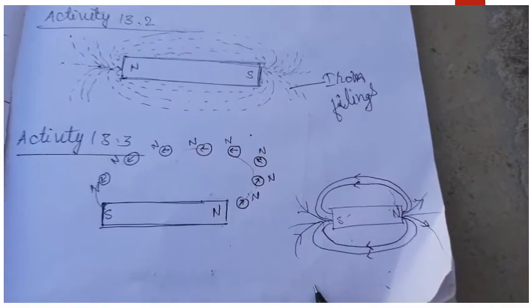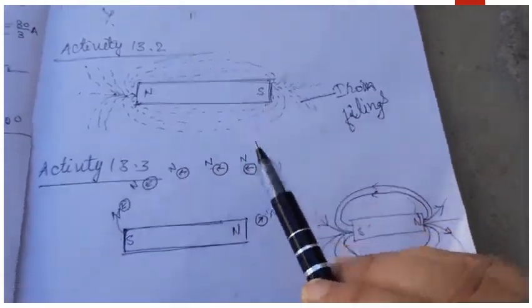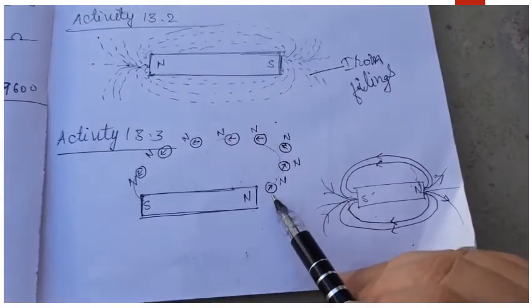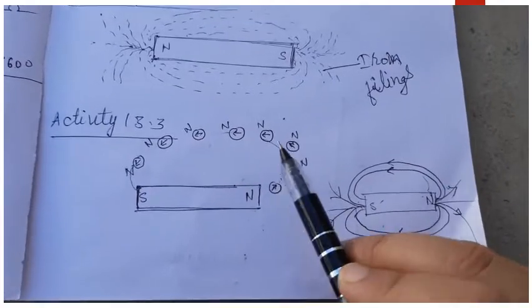In one experiment it is done through iron fillings, the second it is done through the compass, because compass always responds to a magnetic field.